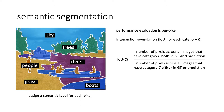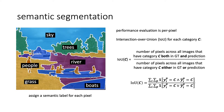Formally, to calculate intersection over union for a category C, we need two numbers. First is the number of pixels across all images that have category C both in the ground truth mask and a prediction mask, and then the number of pixels that have category C assigned either in ground truth or prediction masks. Dividing one by another gives us intersection over union. In this form, it is clear that IoU is a per-pixel evaluation that does not take into account each segment separately.